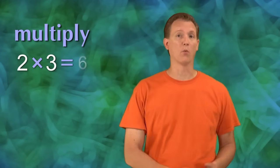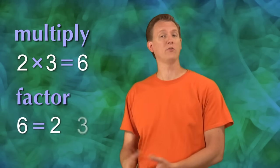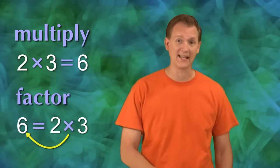When you multiply, you take two numbers and multiply them together to get one number. And when you factor, you take one number and figure out what two numbers you could multiply together to get that number.